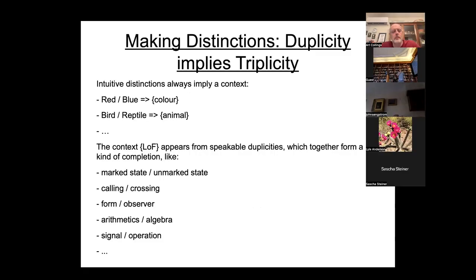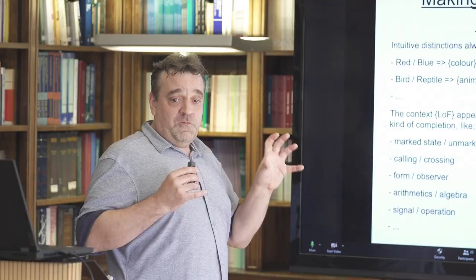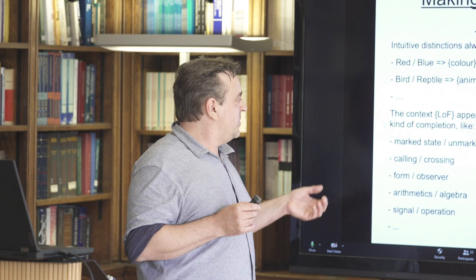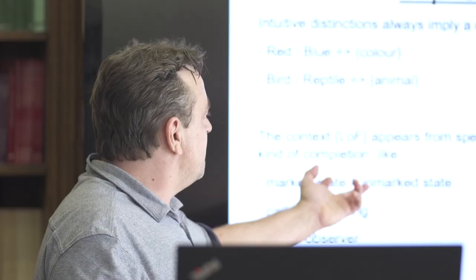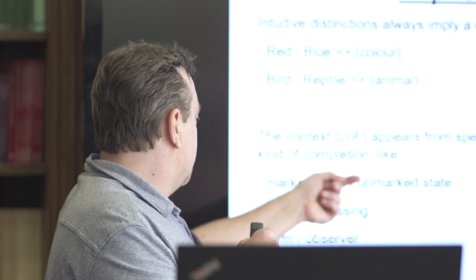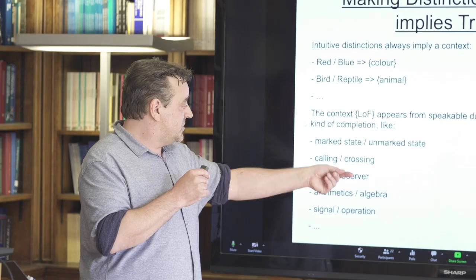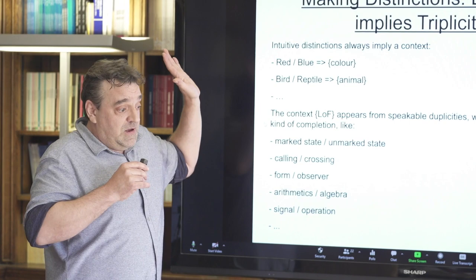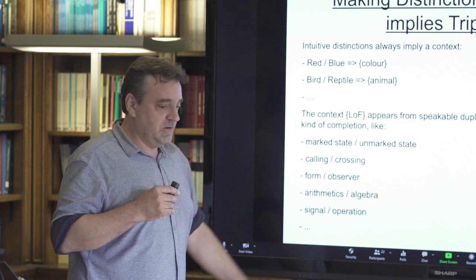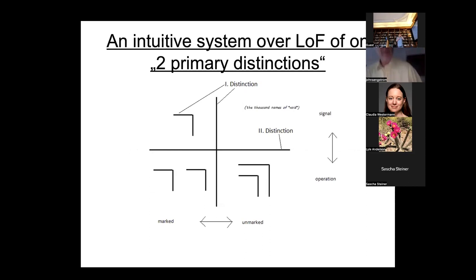When I did the distinctions in my mind from first reading Laws of Form, I found: if we have two marked terms we find a context where they make a distinction, otherwise they're senseless. Taking Laws of Form as the narrative of one — as the context — there would be generally marked distinctions telling something about it: mark, saying, unmarked saying, calling, crossing, form, observer, arithmetics, algebra, and speculative but intuitive signal operation.